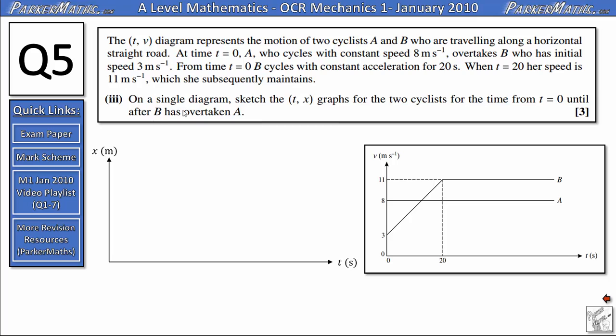In part 3 on a single diagram we need to sketch the displacement time graphs for the two cyclists from time t equals 0 until after B has overtaken A. Let's think first about cyclist A. Cyclist A travels with a constant velocity. Velocity on a displacement time graph is the gradient of the line. That means we need to draw a straight line with a gradient of 8. That shows us that cyclist A is travelling away from the start at a constant rate. So every second it will travel the same distance away.